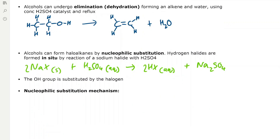Alcohols can also undergo elimination or dehydration reactions to form an alkene and water. This is done using concentrated sulfuric acid as a catalyst under reflux. Ethanol goes to ethene in the presence of concentrated sulfuric acid under reflux, and we also form water — because water is removed, it's a dehydration reaction.